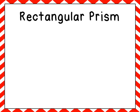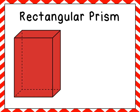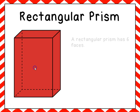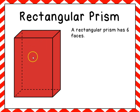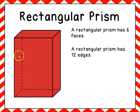The first solid figure we want to take a look at is a rectangular prism. You can see that a number of its faces — these flat surfaces — are shaped like rectangles. A rectangular prism has six faces. It also has twelve edges.